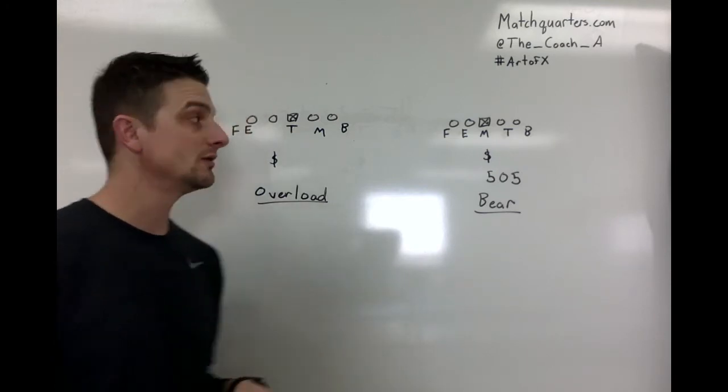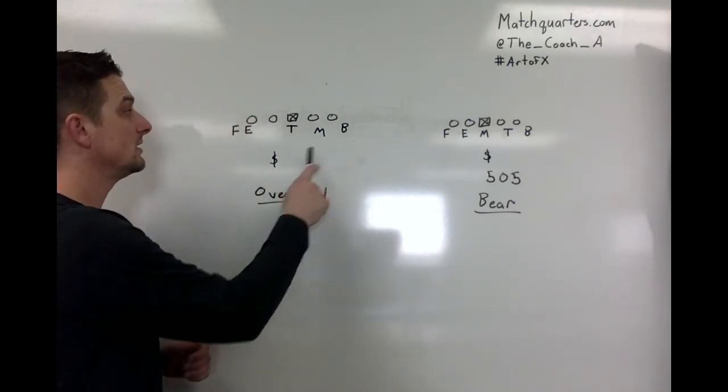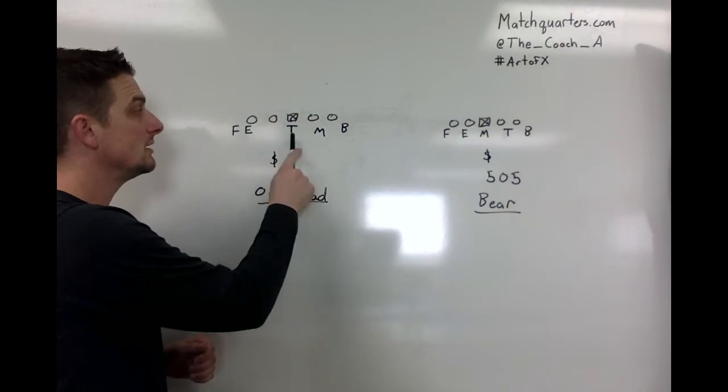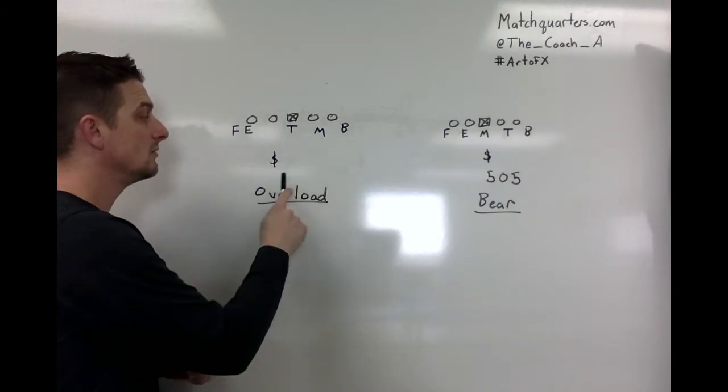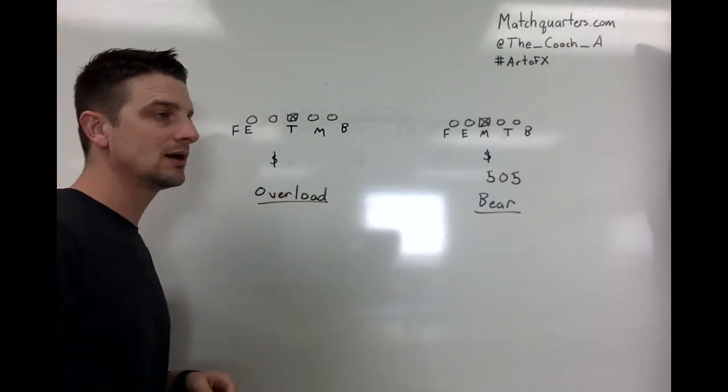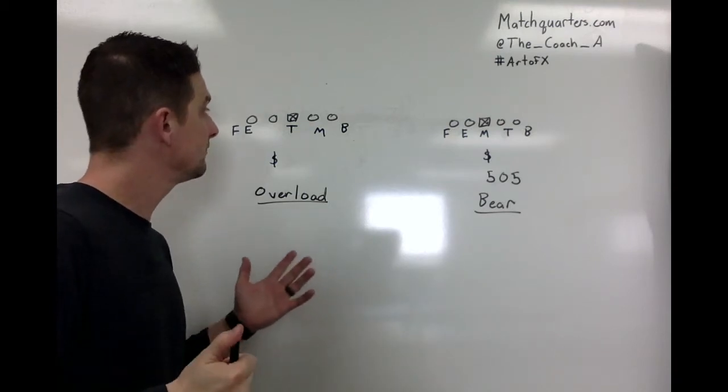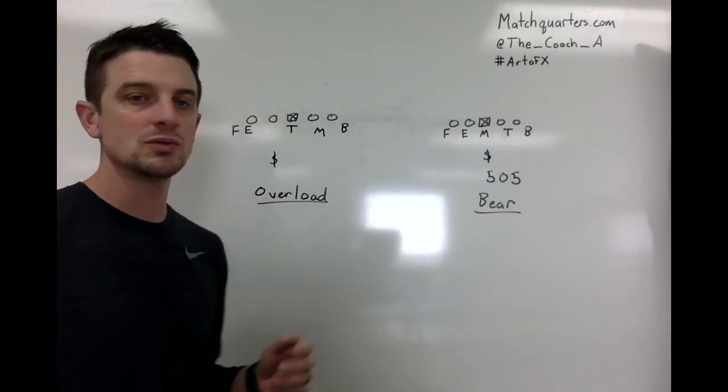The best two ways to do that is an overload front and a bare front. First, let's talk about the overload front. You want to have a field end, a boundary end, a reel end, a tackle, and then your mic and your money or wild linebacker. But you're like, coach, there's like four defensive ends on the field. How do I know which is which?